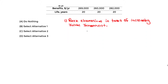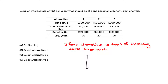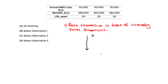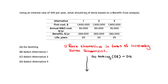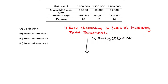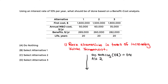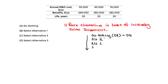We rank in terms of increasing investment. The do-nothing option always comes first with an initial investment of zero dollars. Next is Alternative 2, then Alternative 1, and finally Alternative 3 — ranked from lowest to highest initial cost.